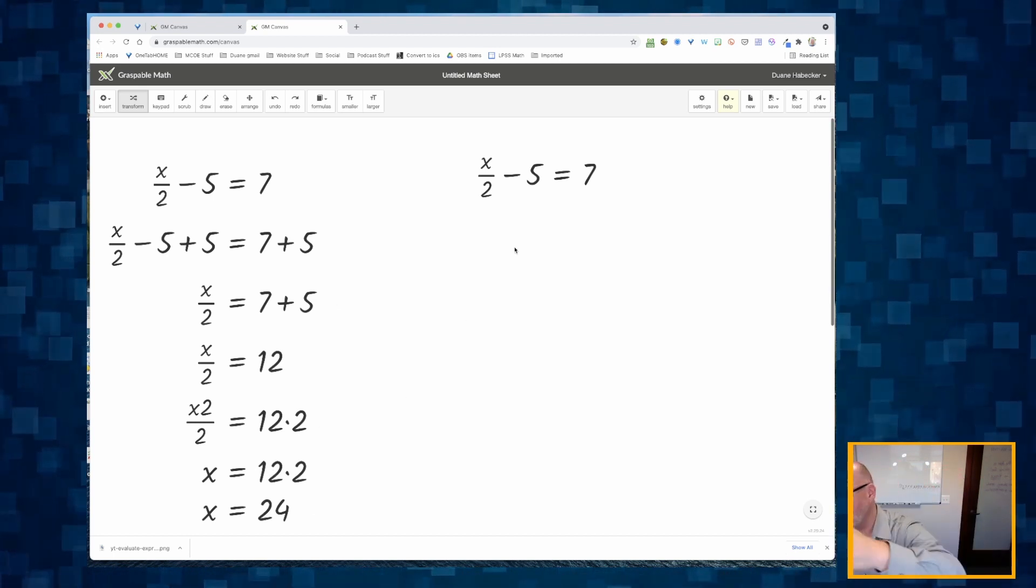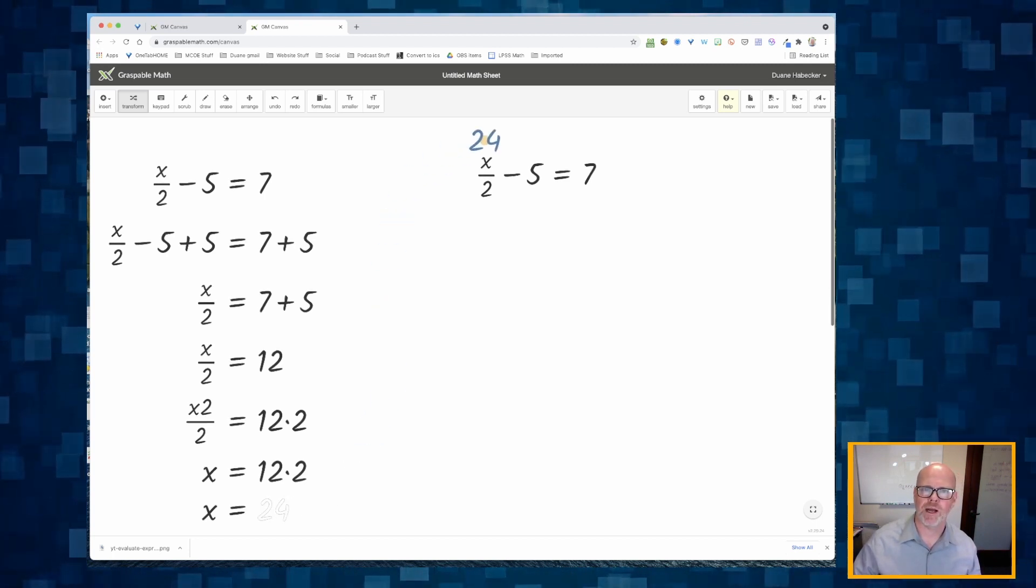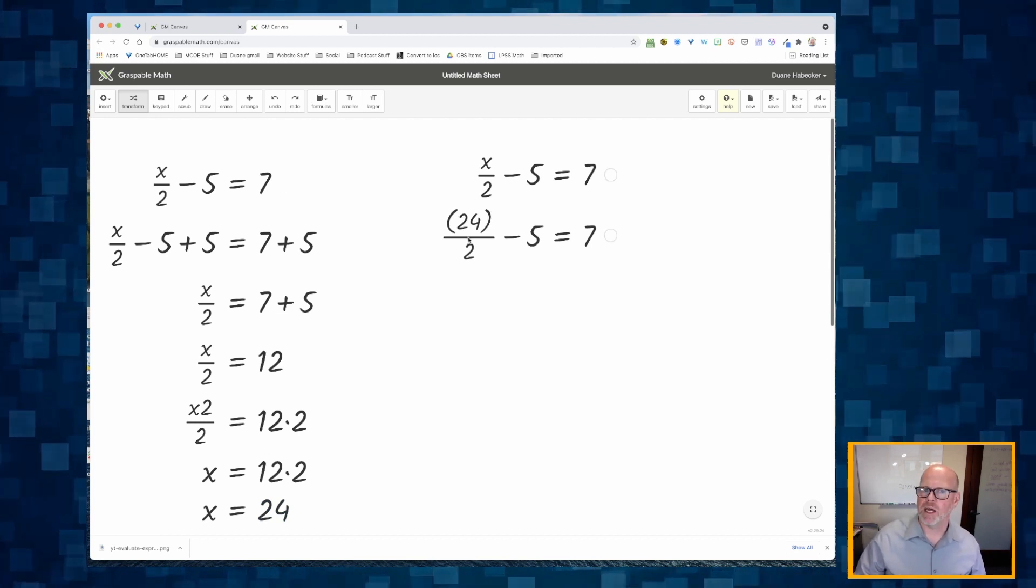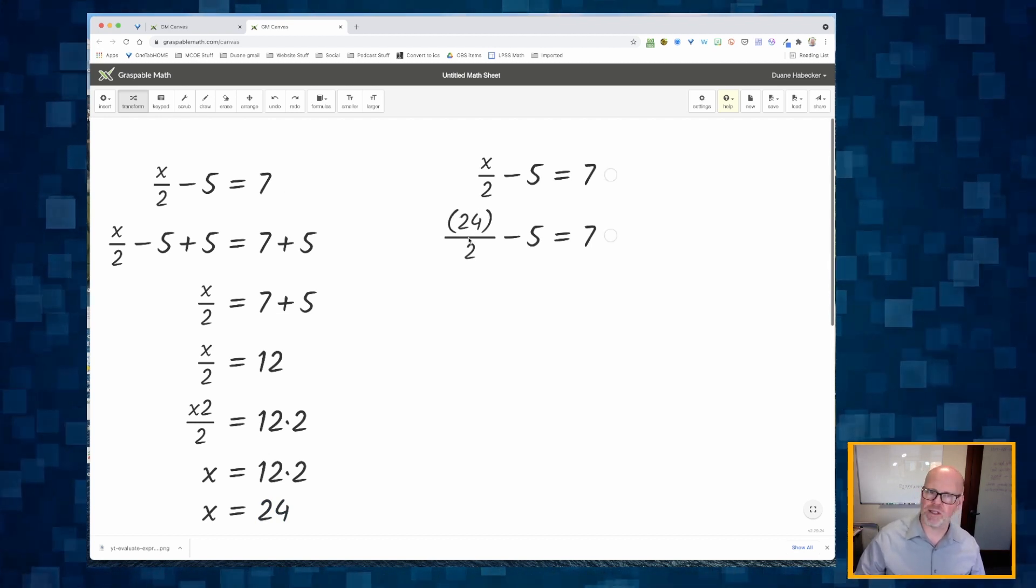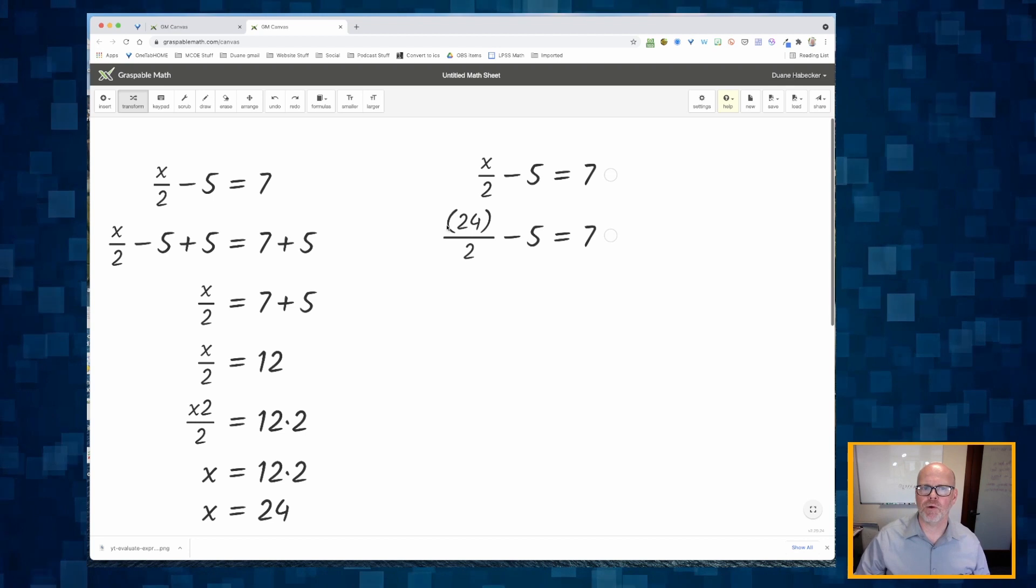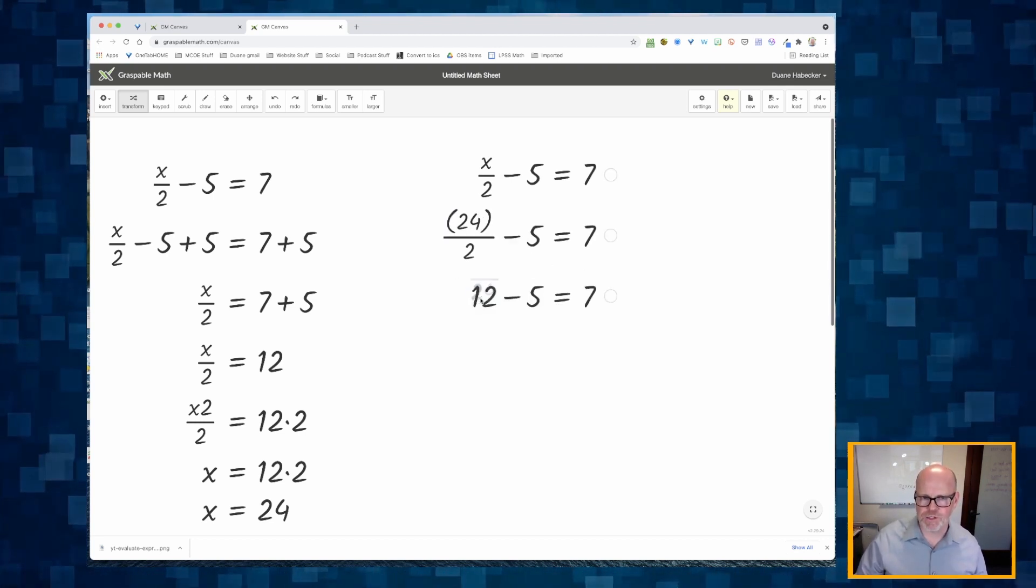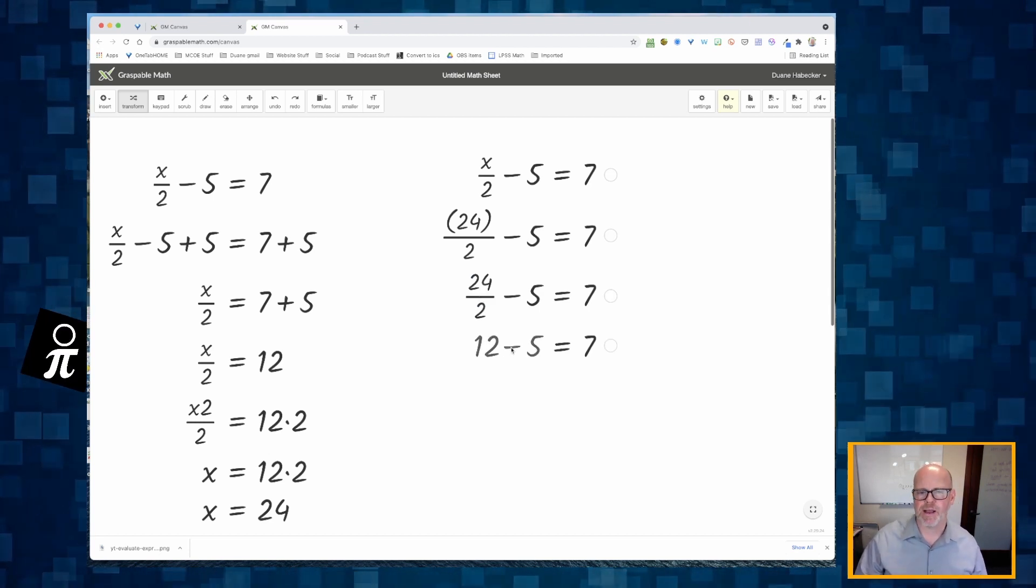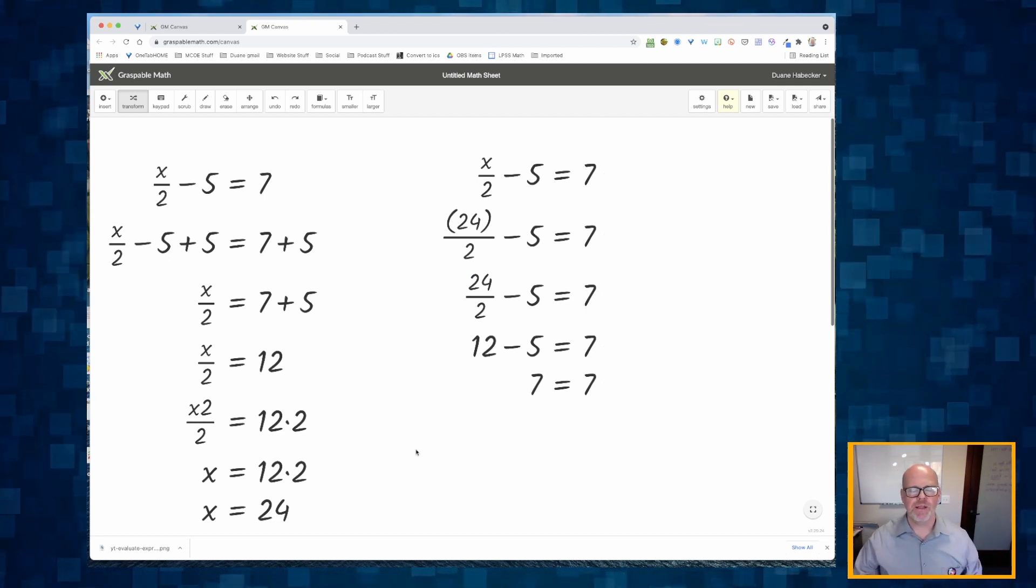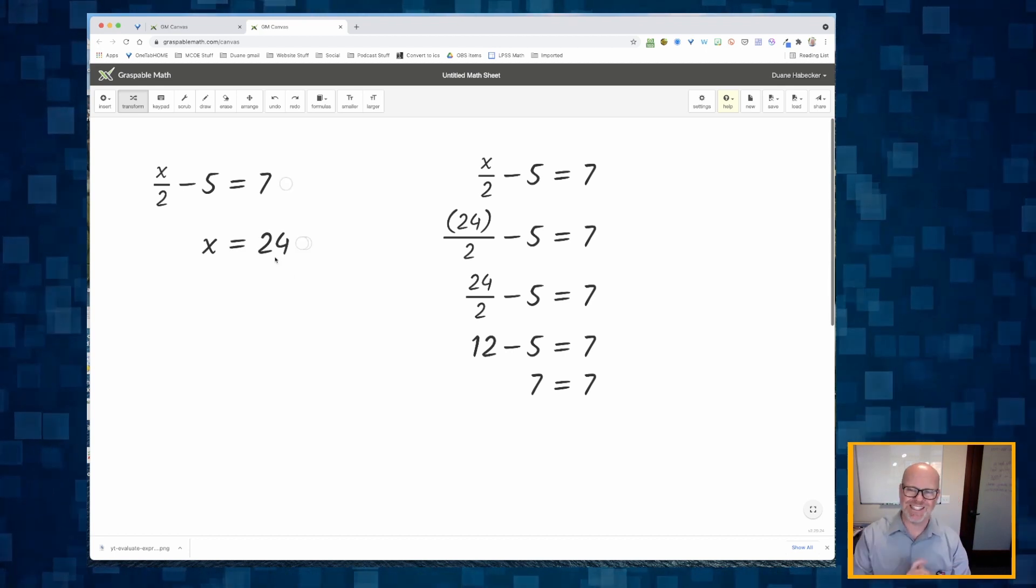How do we check it? We're going to drag it into the other equation. So I'm going to click and hold on that 24 and I'm going to just insert it into that x. I now get 24 divided by 2. It just doesn't like the fact that I'm trying to skip too many steps. I'm clicking on that division symbol. So I'm going to click on the parentheses to clear the parentheses. Now I'm going to click on the division, which gives me 12. Then I can click on the subtraction. That gives me 7. Since 7 is equal to 7, that tells me that my original answer that x is equal to 24 is indeed correct.